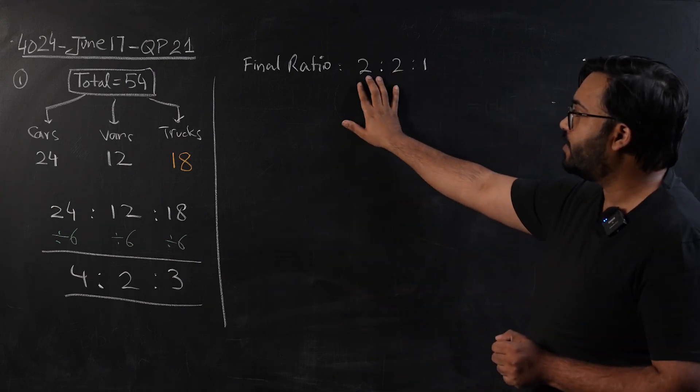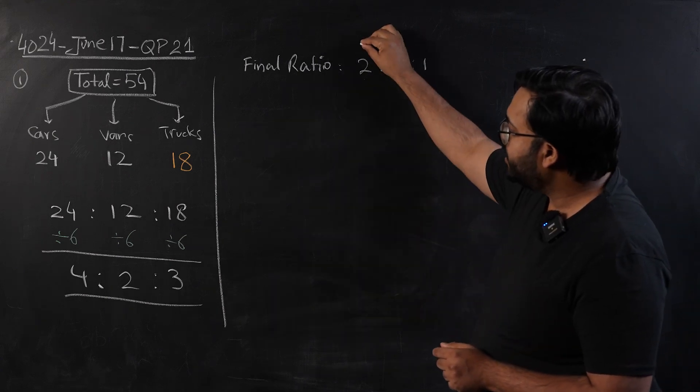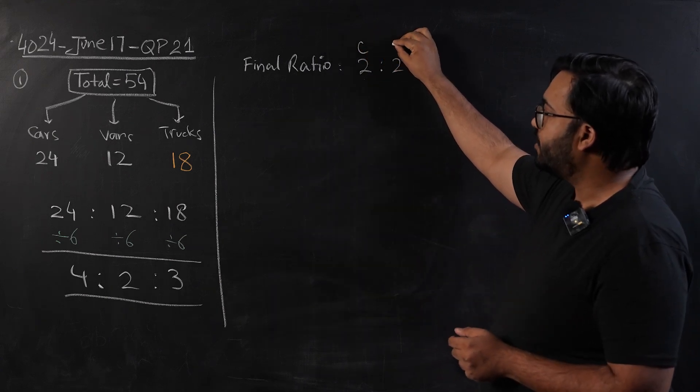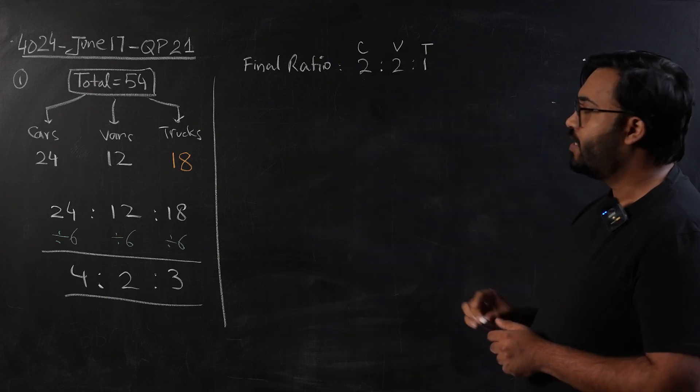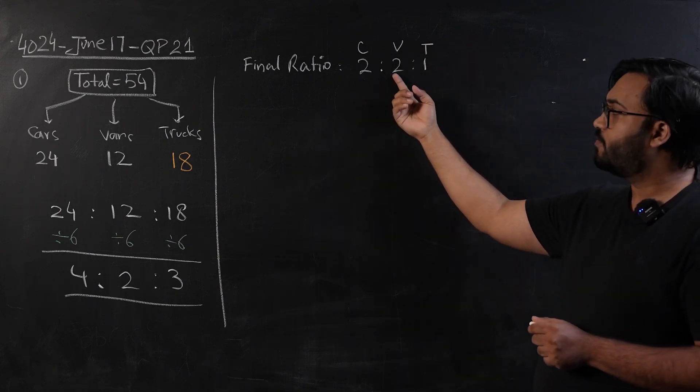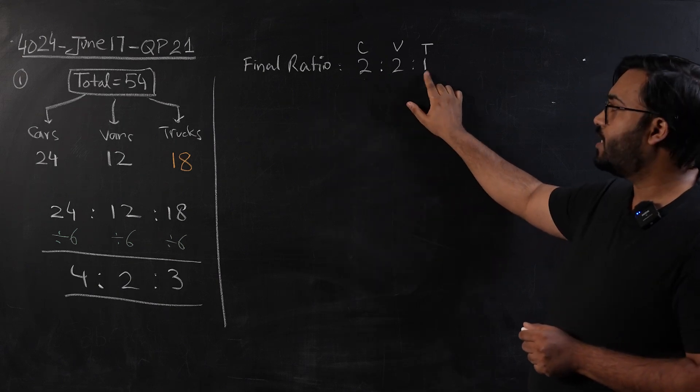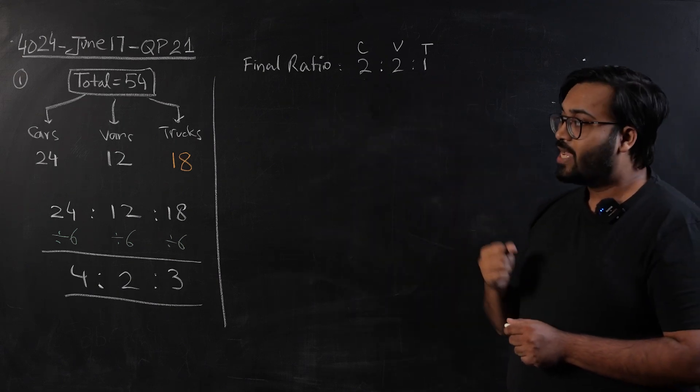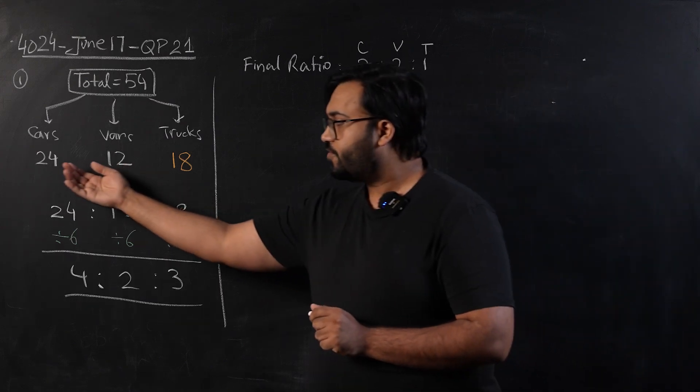To understand this question, first let's have a look at the final ratio. The final ratio is telling us that he will have equal number of cars and vans, and he will have half the number of cars and vans as trucks. This is going to give us a nice insight to this idea.